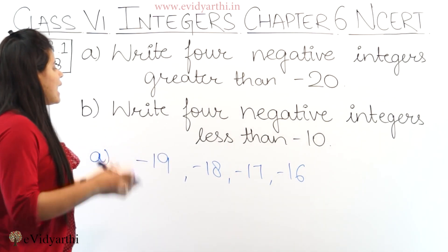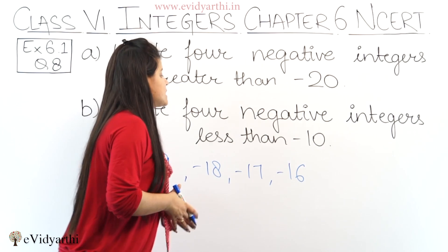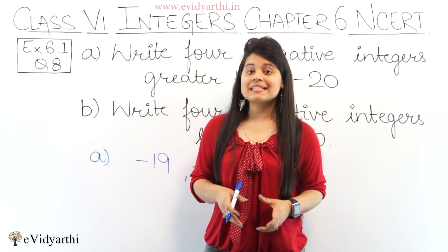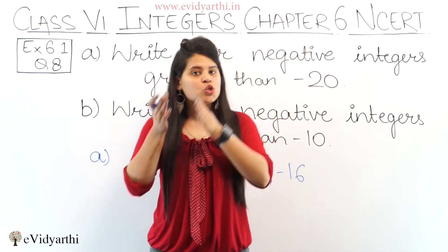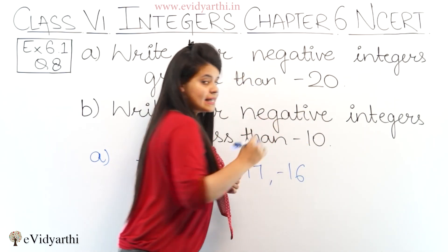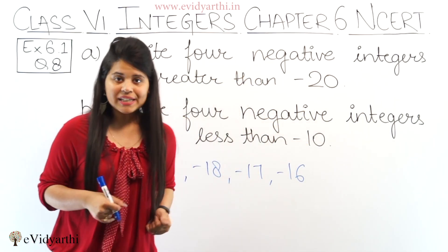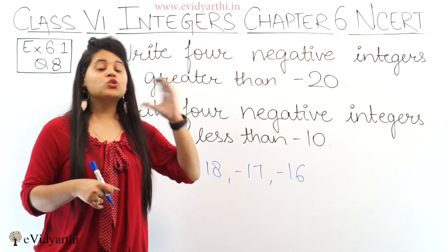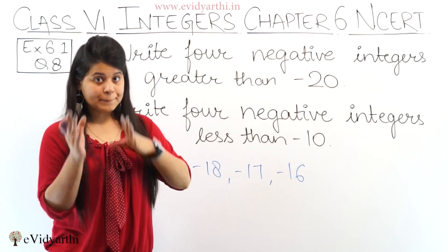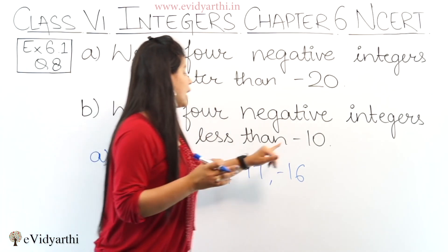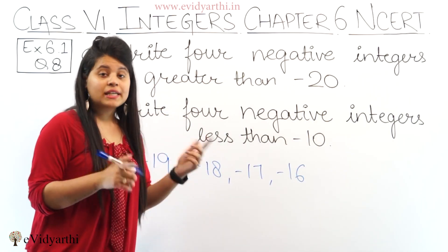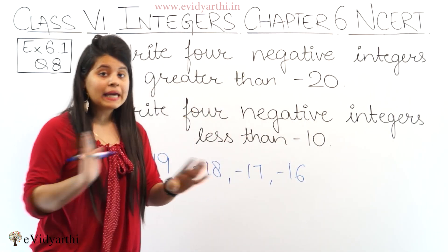Next, in this part we have to write 4 negative integers less than minus 10. Now we have to write integers smaller than minus 10. Negative integers which are small means a bigger number digit-wise, so from minus 10 the smaller numbers would be minus 11 onwards.